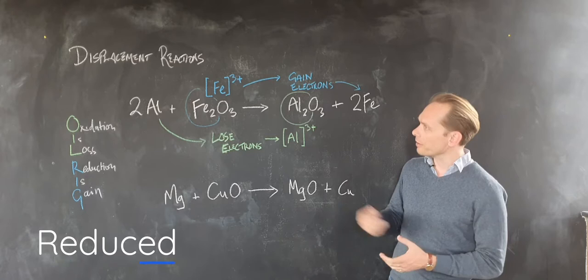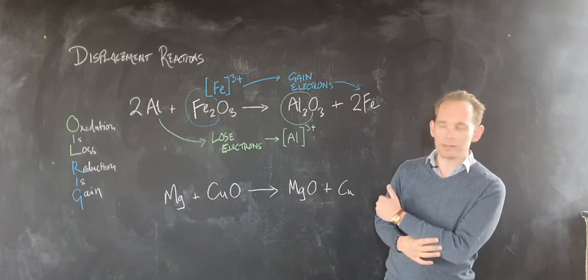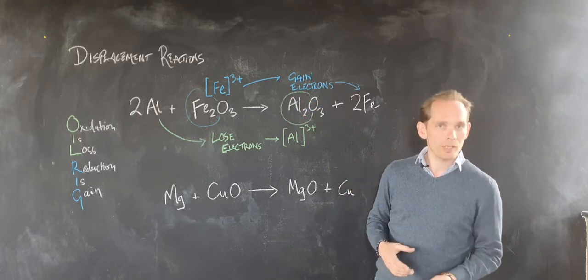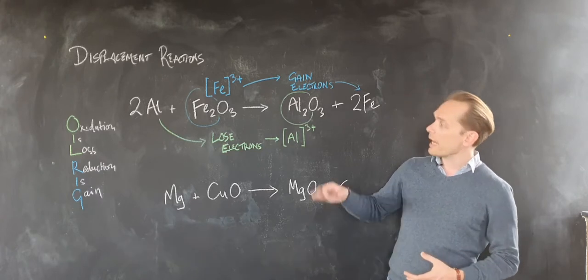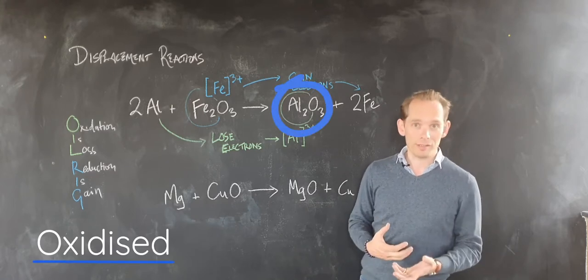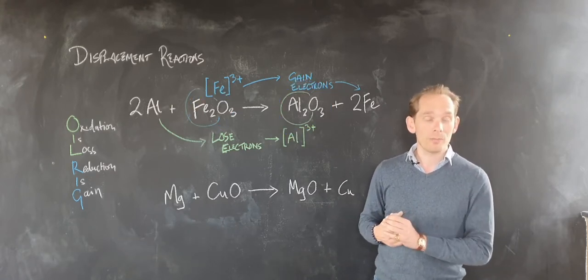So in these two examples we've got two balanced equations. We've got aluminium with iron oxide turning into aluminium oxide and iron, and that's happening because aluminium is more reactive than iron, it has a higher affinity for oxygen. The aluminium losing electrons is the one being oxidized. The iron oxide is the compound being reduced.